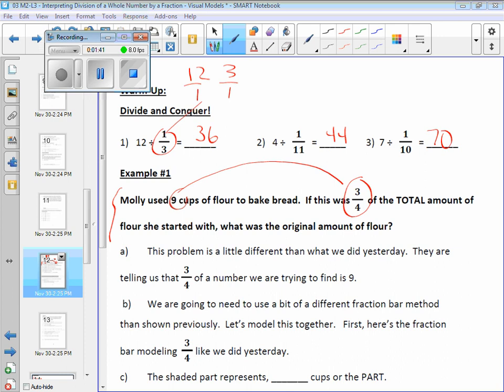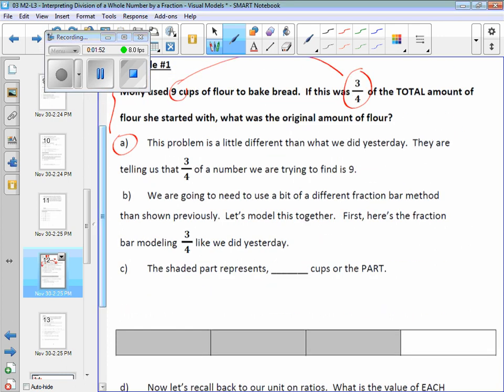There's two ways you could model it. It'll also relate very closely to part-whole relationships, as we did when we did the ratios. Okay, as stated, this problem is a little different than what we did. They're telling us that three quarters of a number that we're trying to find has to equal nine. Essentially, what it is, is three-fourths times what number equals nine.